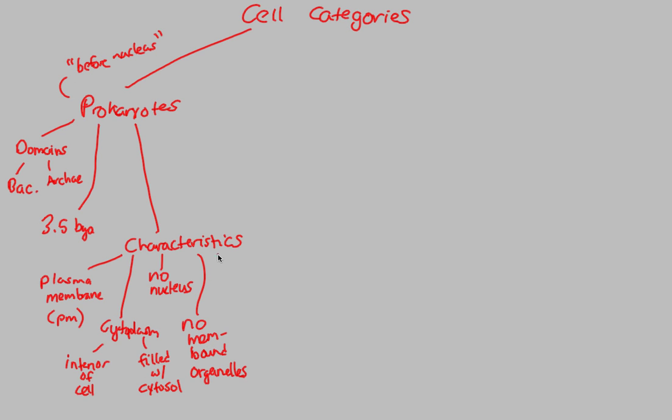In addition, prokaryotes have ribosomes. Ribosomes are cell structures or parts of cells that are involved in protein synthesis. And proteins are things that the cell can use to carry out its functions. And lastly, their size: prokaryotes are about 1 to 10 micrometers.